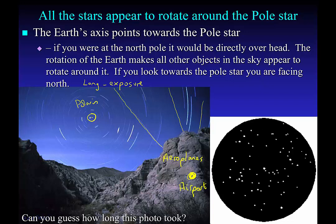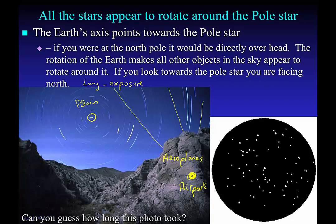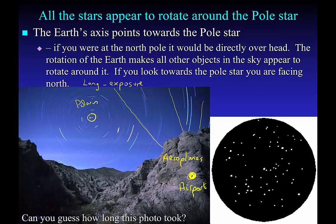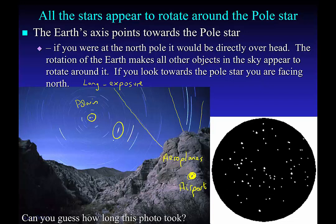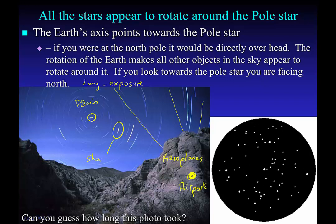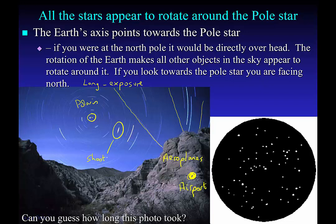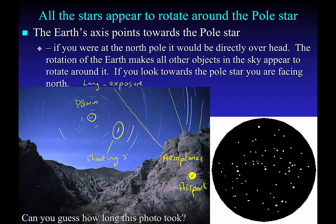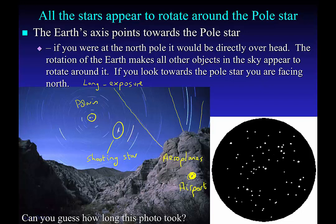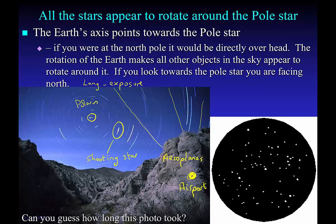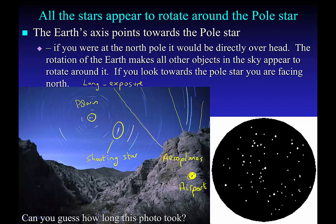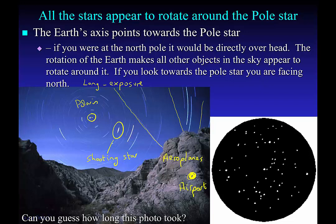If you're really eagle-eyed, you may be able to pick out one more object. That object there is most likely a shooting star. A shooting star is simply a piece of dust that's burning up in the Earth's atmosphere, causing quite a bright fireball there for that particular one.